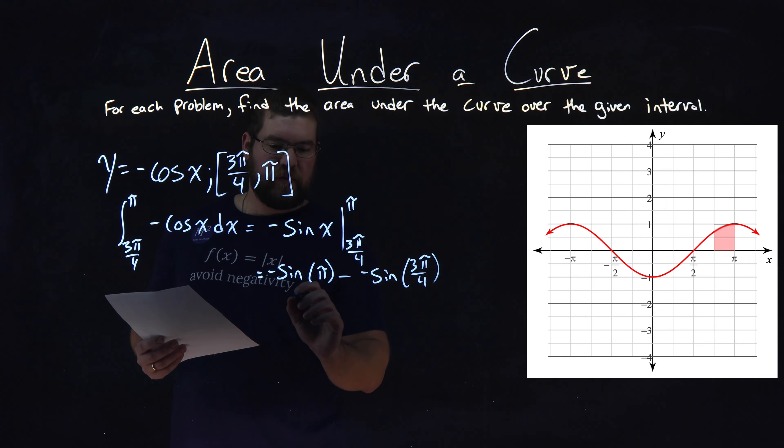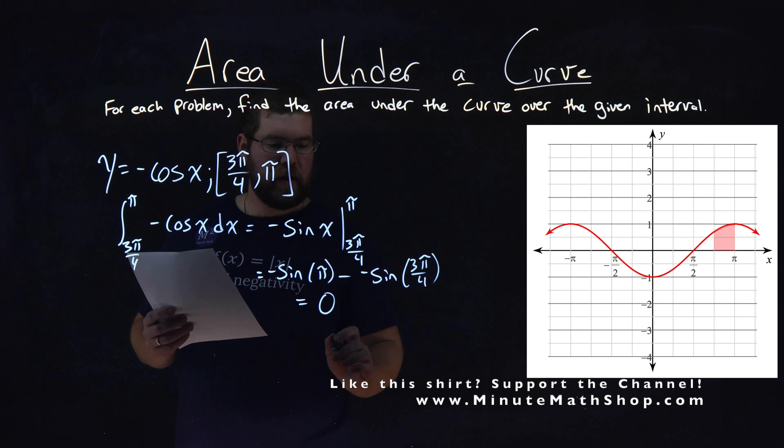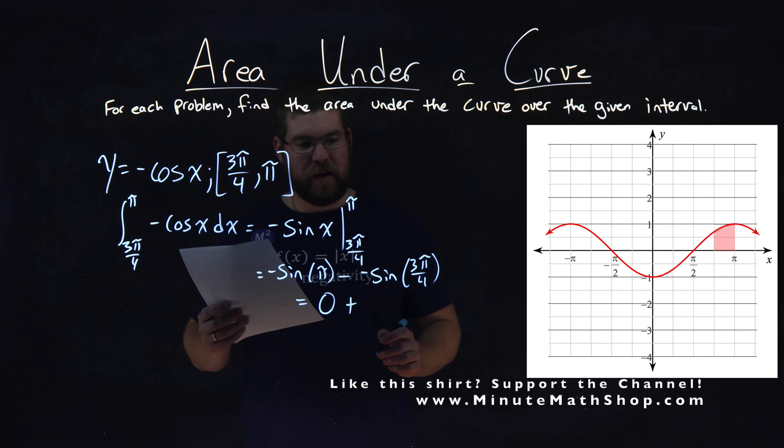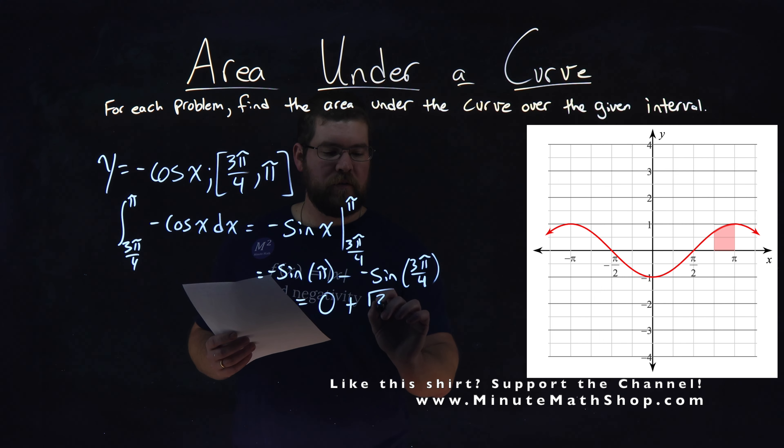Now we need to simplify this. Well, negative sine of π is just negative 0, or 0, right? Plus a negative, minus a negative is like adding. So we add here, and sine of 3π over 4, if you can see the 4 there, is square root of 2 over 2.